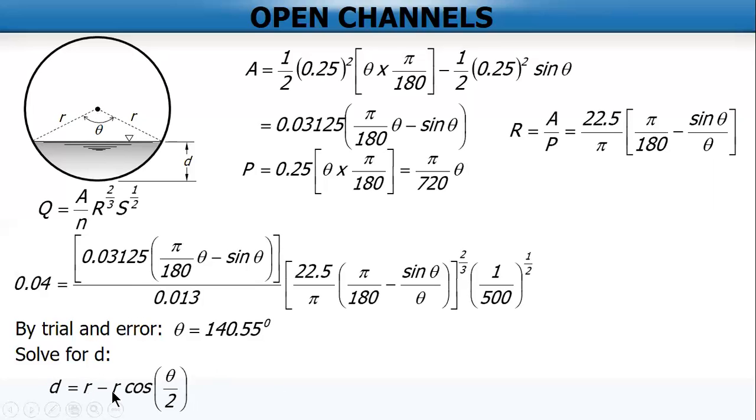Substitute: we have R equal to 0.25 and theta equal to 140.55. And compute, we get d equal to 0.1656 meters.